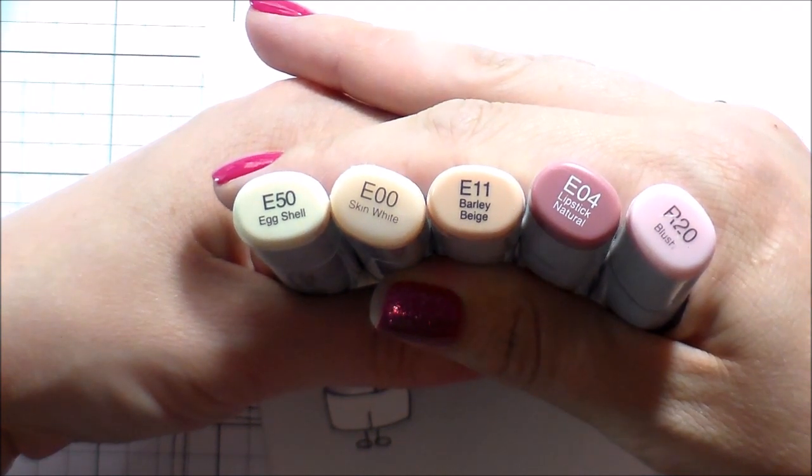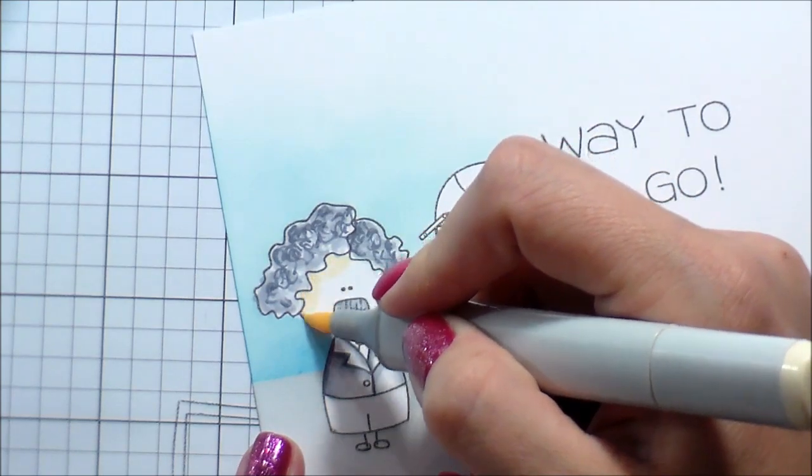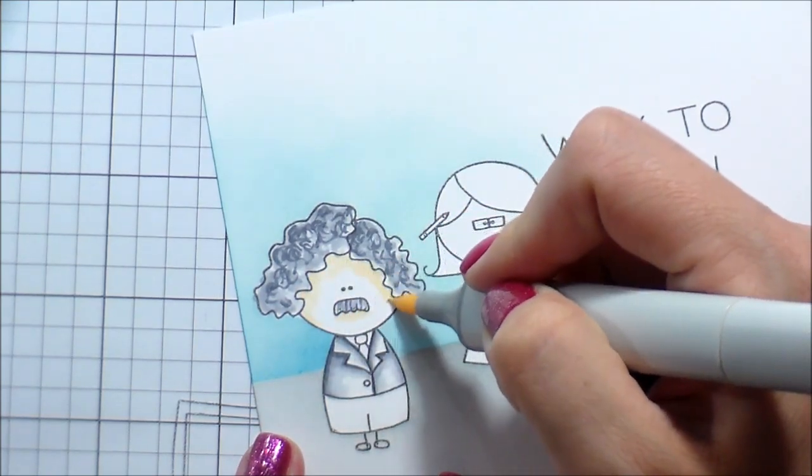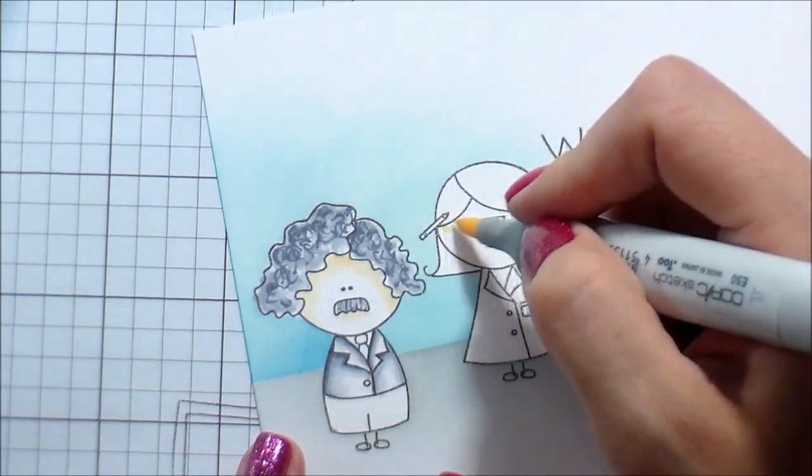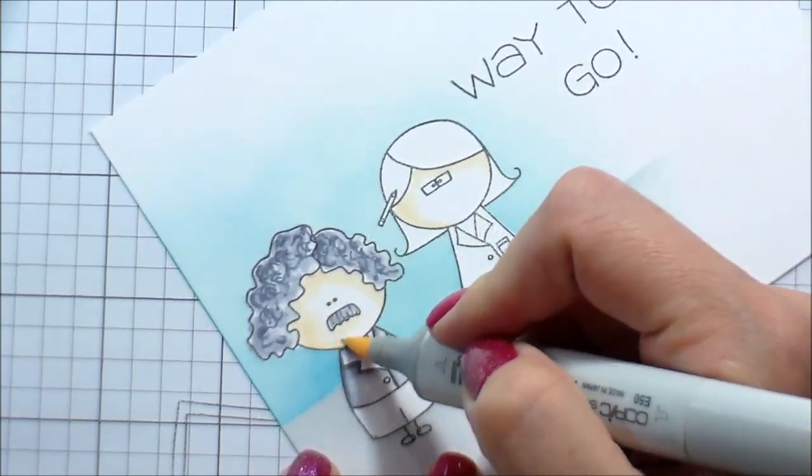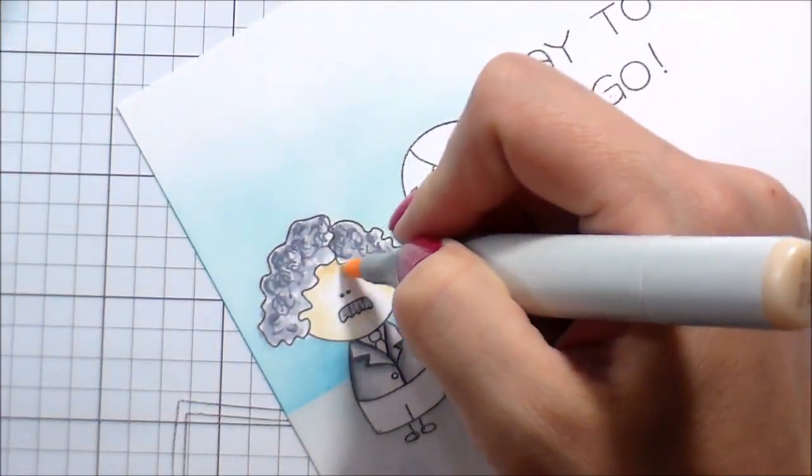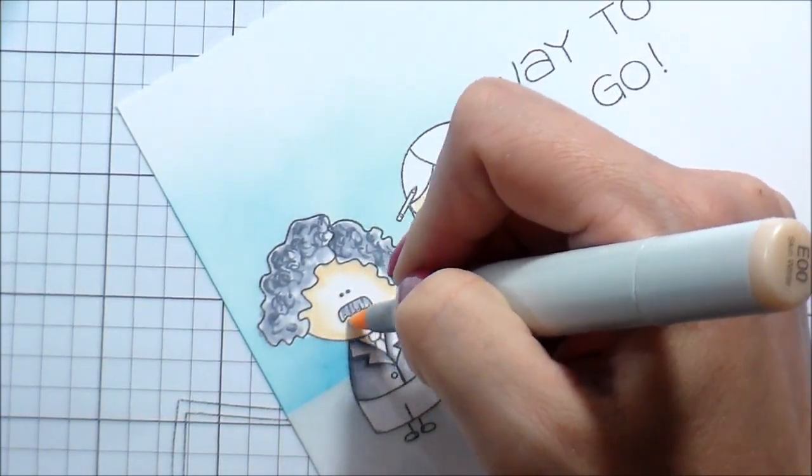So then I'm going to move on to the skin tones. So this is kind of my go-to skin tone. I did a video recently where I covered several different skin tones. This particular combination was not in there. So I will link to that at the end of the video in case you're interested in seeing that. That also actually uses Ink Blot Shop stamps.